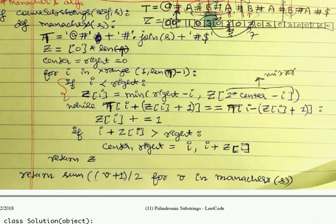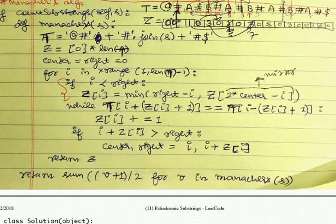For zero entries, (0 + 1) // 2 = 0 using integer division. For Z=5, (5+1)//2 = 3 palindromes - for example A is one, BAB is two, and ABABA is three. We use integer floor division here. Taking B as center, there are three palindromes: B itself is one, ABA is two, and BABAB is three. Each center with a different index represents a different palindrome, which is exactly what this algorithm counts.